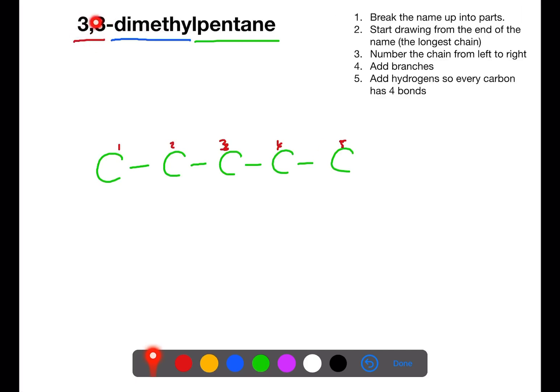We can see that on carbon 3 we have two branches because we have 3,3. Both of these are methyl branches of one carbon.